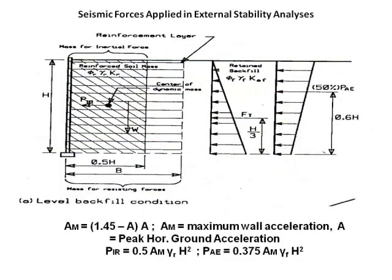The next slide shows seismic forces applied in external stability analyses. To the left is the internal inertial force exerted on the reinforced soil mass; its point of application is at the center of the dynamic mass, with width equal to 0.5 times the wall height. To the right is 50% of PAE, as defined below, along with the equations for both PAE and PIR. The 50% assumption is used because the inertial force on the reinforced soil mass and the dynamic active earth pressure don't peak at the same time. The slide also includes an equation for maximum wall acceleration.